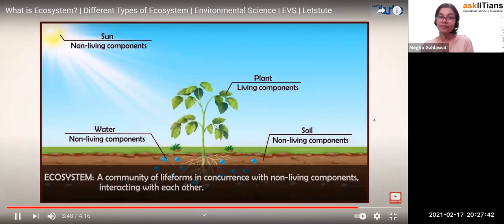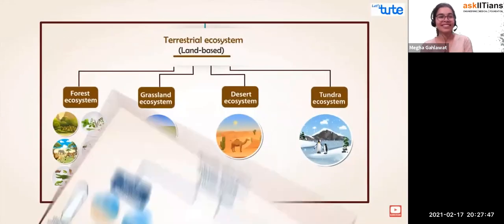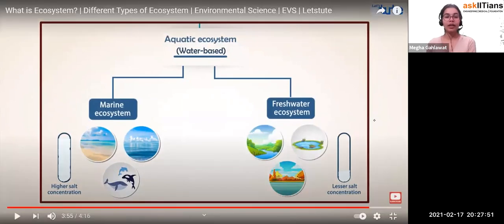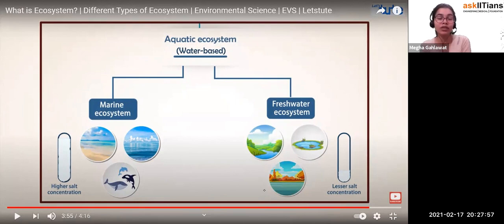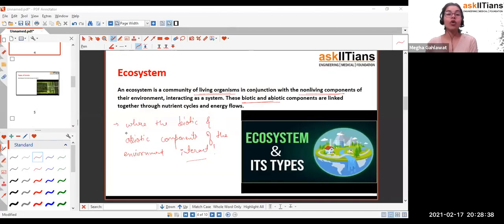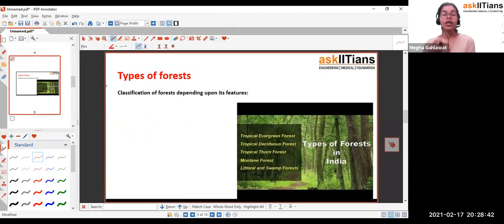Now exploring aquatic ecosystems: based on salt concentration, they are classified into marine ecosystems and freshwater ecosystems. Marine ecosystems have higher salt concentration and include seas and oceans with a wide variety of organisms. Freshwater ecosystems have lesser salt content and include rivers, ponds, lakes, and streams with comparatively fewer organisms. That covers the different types of ecosystems — aquatic and terrestrial.